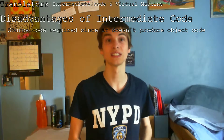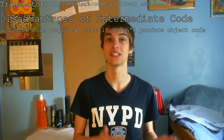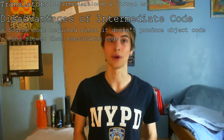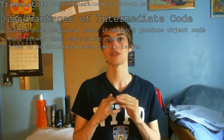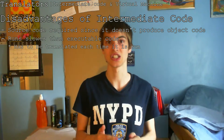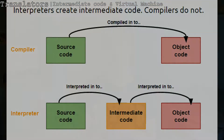The disadvantages of intermediate code are that the source code is required since it does not produce object code. It runs slower than compiled code since it needs to be translated each time it is run. This diagram shows that the compiler goes straight from source code to object code, whereas the interpreter goes source code to intermediate code, then to object code.